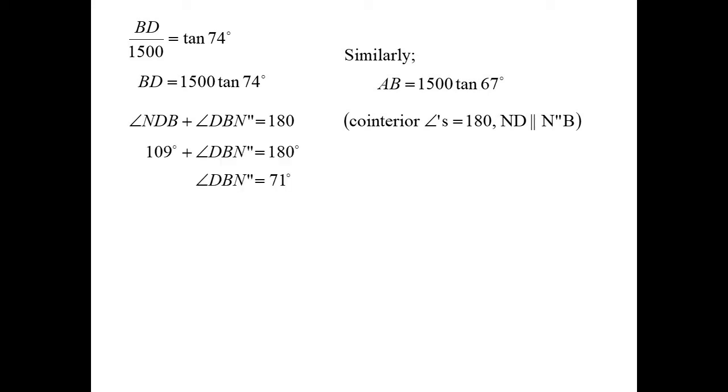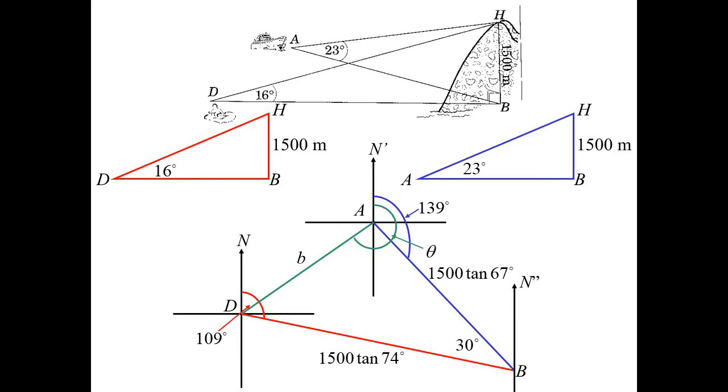So playing around with that, we get that D, B, N double dash is 71 degrees. And I could do the same thing to find A, B, N double dash. It would turn out to be 41 degrees. Now, from there, D, B, N is made up of A, B, D, and A, B, N. So that tells me that A, B, D is 30. So back to our diagram. There it is, 30.